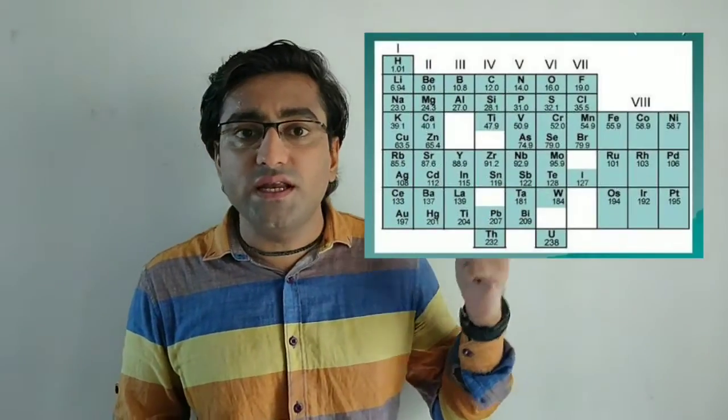This law was stated in the year 1869 by a Russian chemist Dmitry Ivanovich Mendeleev. On the basis of his law, he formulated the table that you can see on the screen, which is called Mendeleev's Periodic Table. Mendeleev was a great scientist because he was the first to successfully classify all 63 elements that were discovered at his time.